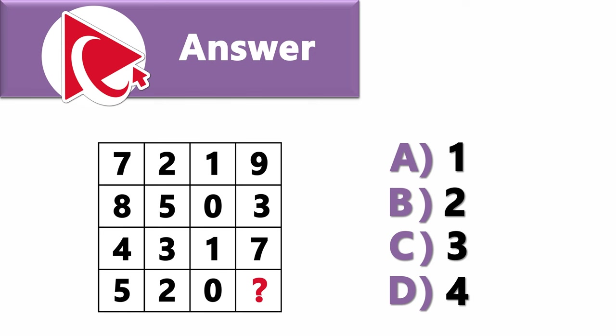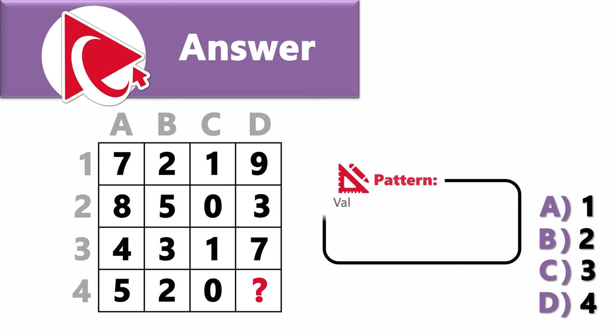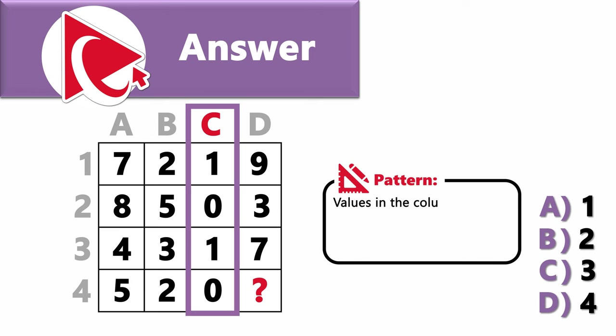To help us detect the pattern, let's break down the 4x4 matrix into columns and rows, numbered as rows 1, 2, 3, and 4, and columns A, B, C, and D. What's unusual about this puzzle is that values in column C define the sign for the math operation.